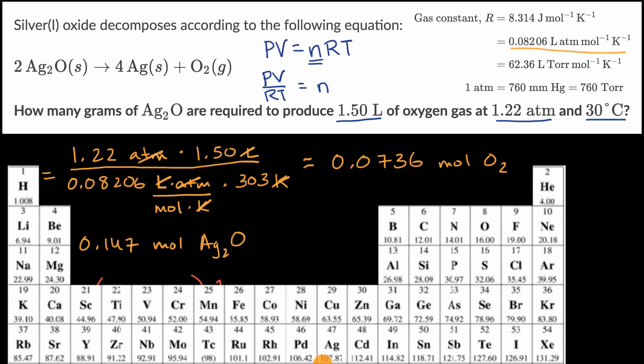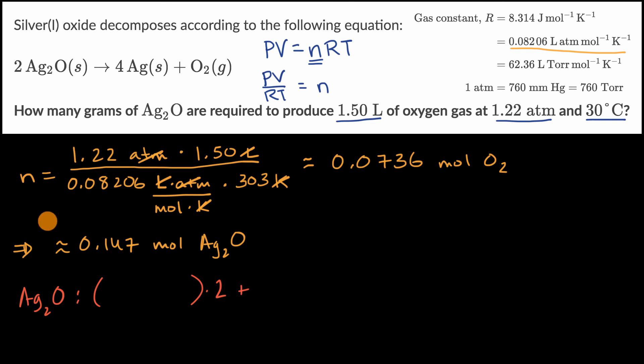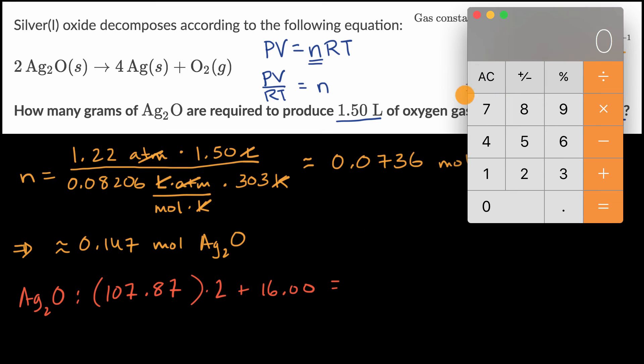The molar mass of silver is 107.87, oxygen is 16.00. So that gives us 107.87 for each of the silvers, plus 16.00 for the oxygen. 107.87 times 2 equals that.